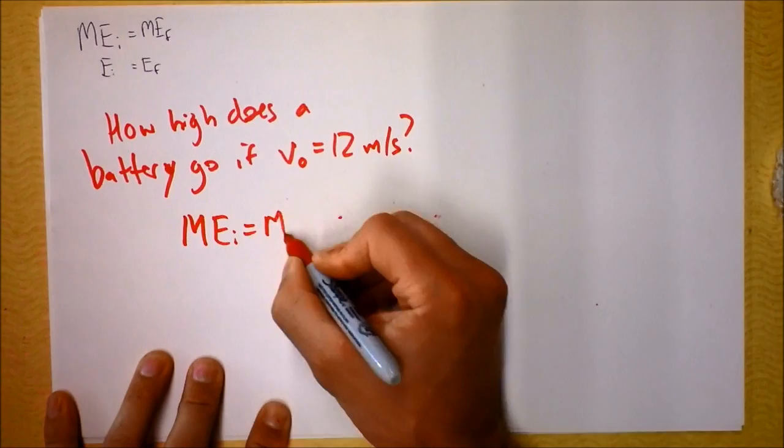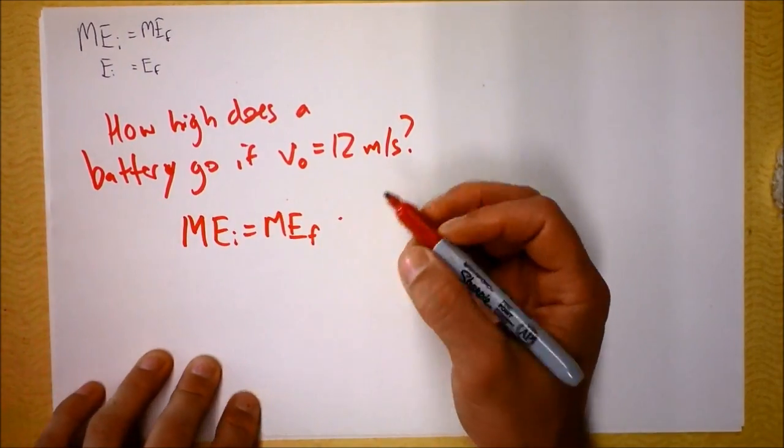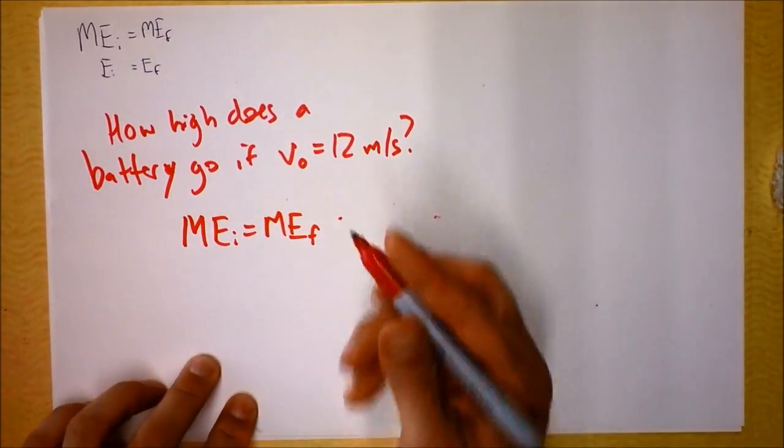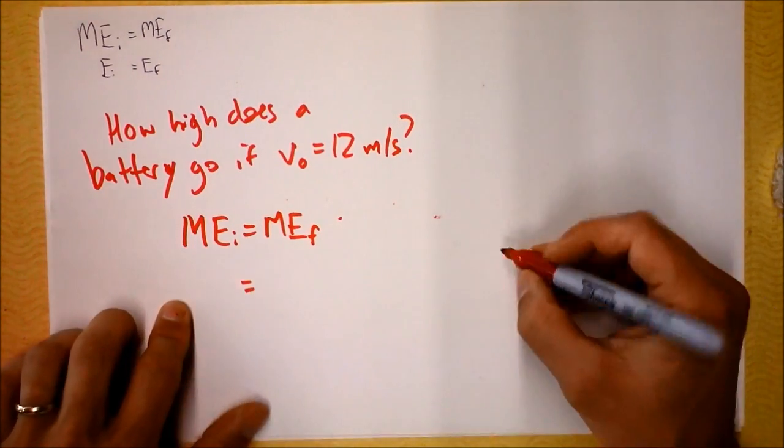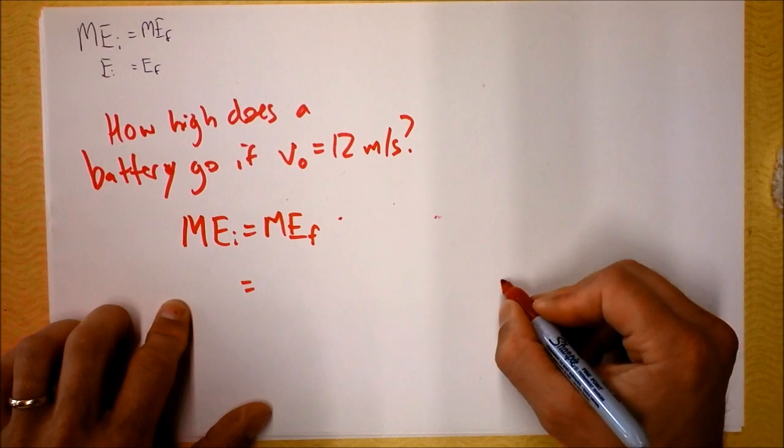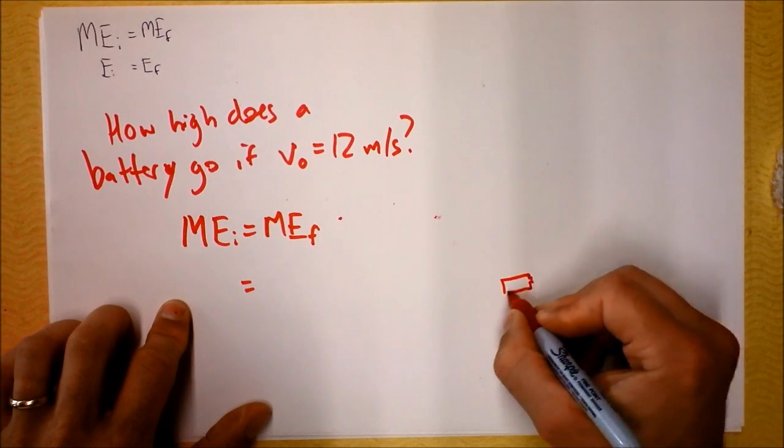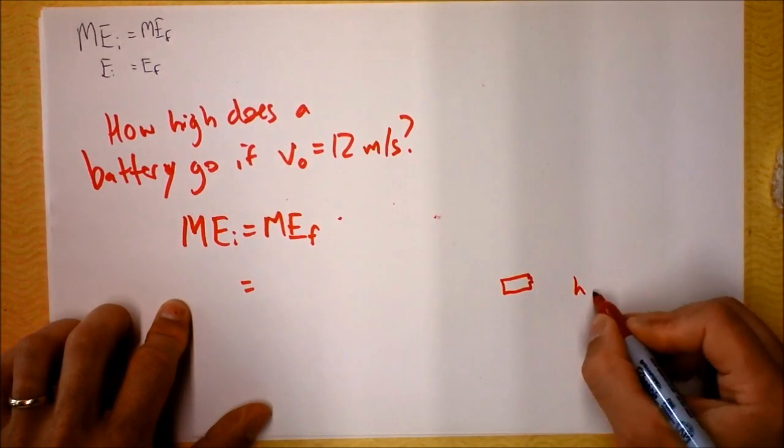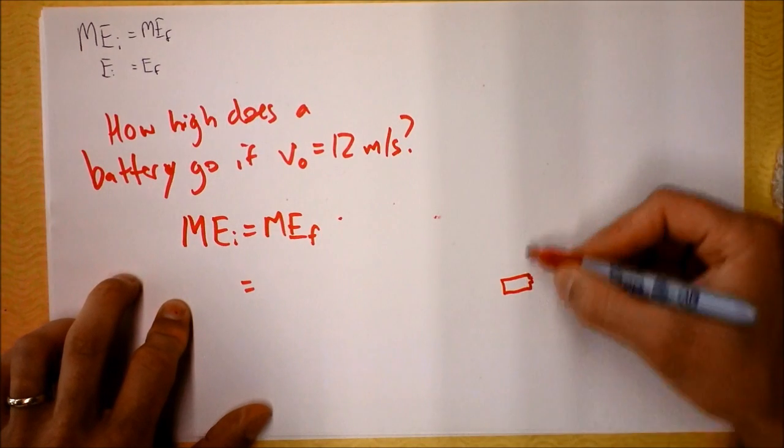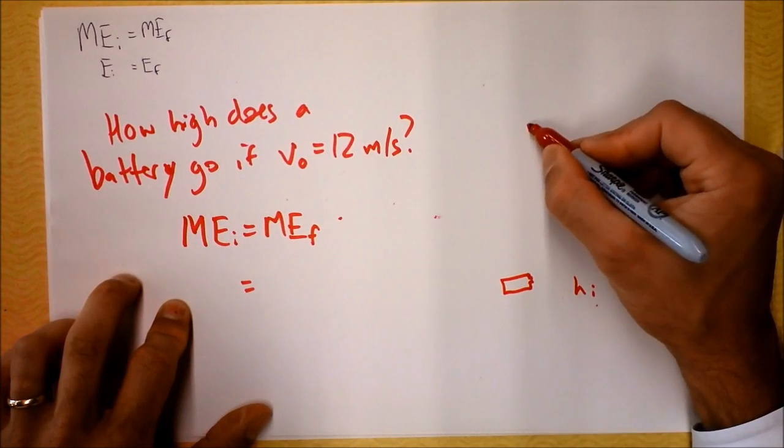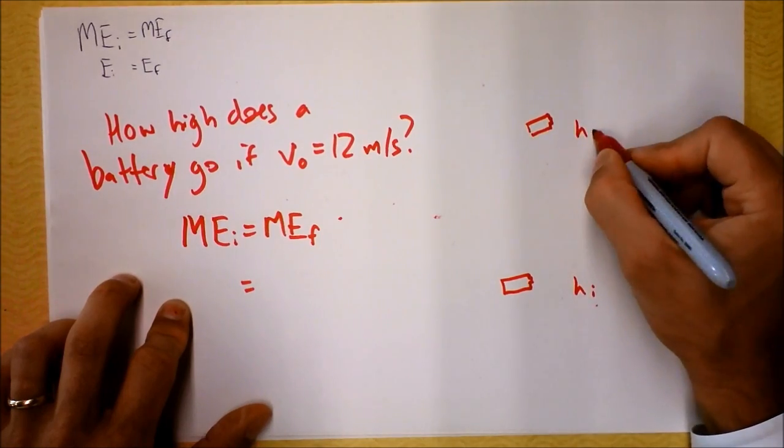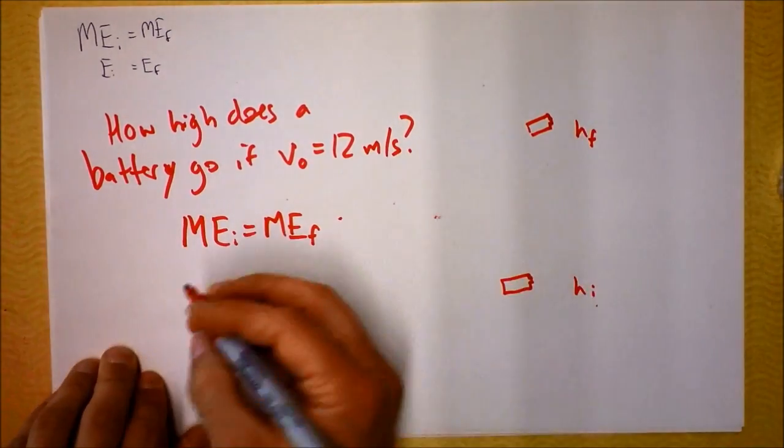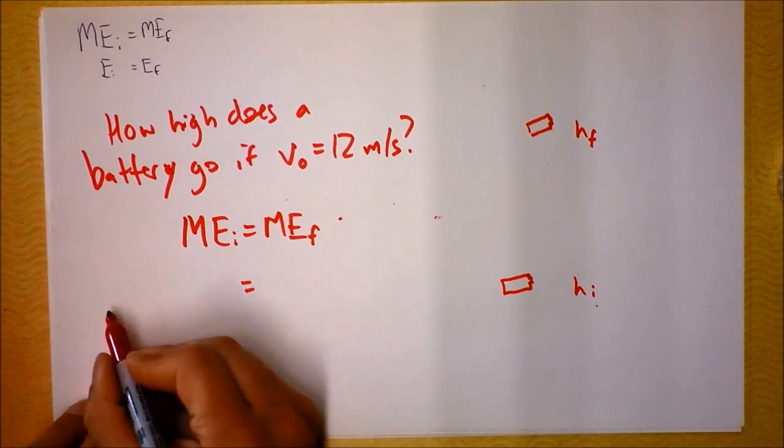The way to do this is to write the statement MEi is MEf. We are assuming there's no friction. So the mechanical energy initially, the battery is down here, we're going to call this H initial. Finally the battery is up at the top of its path, and we're going to call that H final.